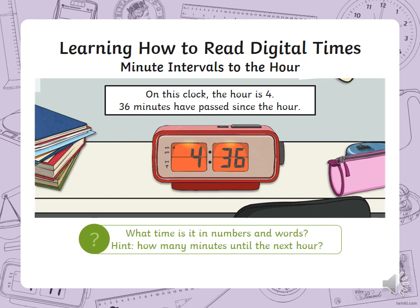Have a look at this example. On this clock, the hour is 4 and 36 minutes have passed since the hour. What time is it in numbers and in words? How many minutes are left until the next hour? Follow the method from the previous examples and work it out. The time is 24 minutes to 5, because 36 plus 24 gives us 60 and the next hour after 4 is 5.